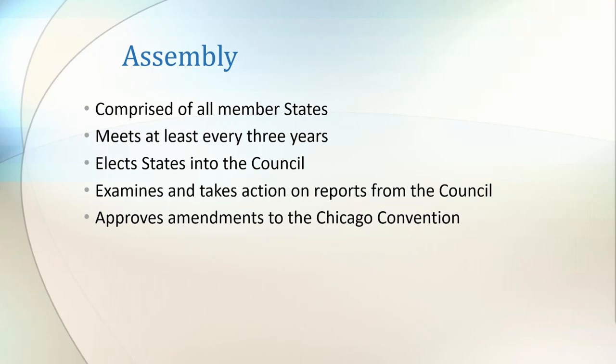ICAO has an assembly which is comprised of all member states. The assembly meets at least every three years, though can be called at any time if necessary. An assembly session can only take place if at least 20% of the member states are present. The assembly's roles include electing states into the council, reviewing and taking action on reports produced by the council, and approving amendments to the Chicago Convention.